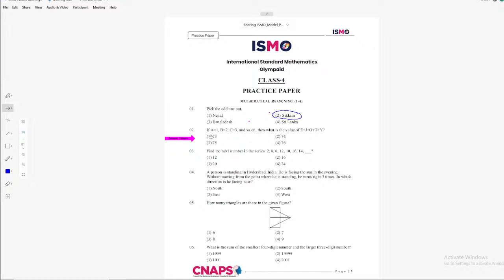Question number 2. If A is equal to 1, B is equal to 2, C is equal to 3 and so on, then what is the value of E plus J plus O plus T plus Y? So all alphabets are numbered from 1 to 26.